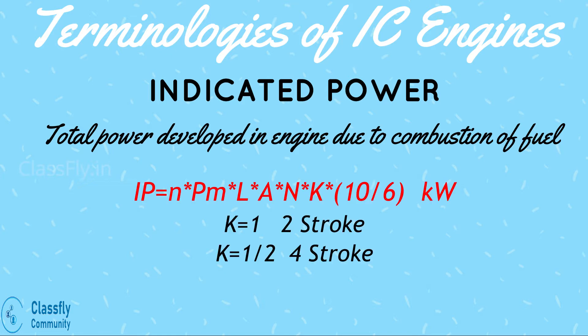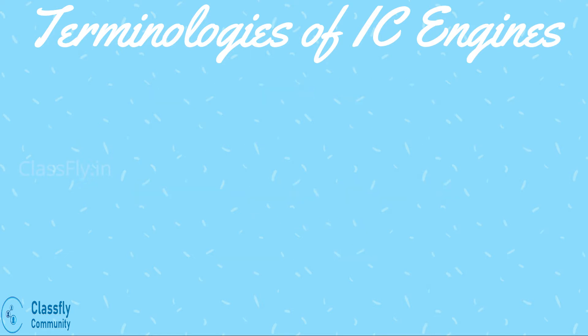The formula for indicated power is n·pm·l·a·n·k × 10⁻⁶, where n is the number of cylinders, pm is the mean effective pressure, l is the length of the stroke, a is the area of cross-section of the cylinder, n is the engine speed, and k is a simplification factor equal to 1/2 for a four-stroke engine and 1 for a two-stroke engine.